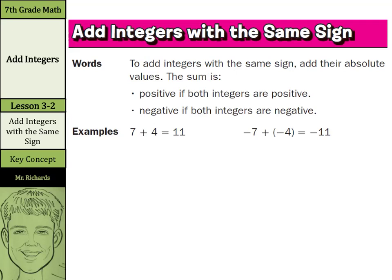When we're adding integers with the same sign, we add their absolute values, and their sum is positive if both integers are positive, or negative if both integers are negative. So when I have just 7 plus 4, that's 11. But if I have negative 7 plus negative 4, we can go 7 plus 4 is 11, but keep it negative. Both positive gives a positive answer; both negative means add them and keep your answer negative. Let's look at a couple of examples.